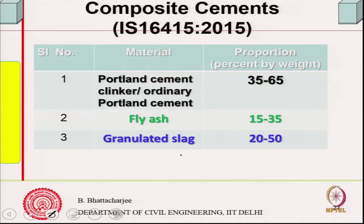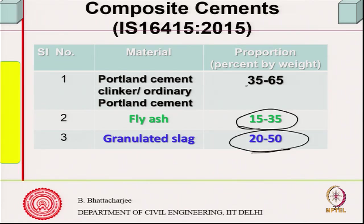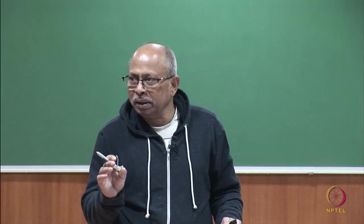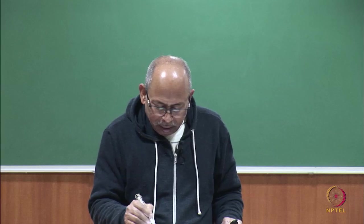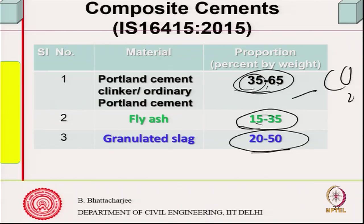The current code gives: fly ash around 15–35%, slag from 20–50%, and Portland cement making up the remainder. You can go up to 35–40% replacement and use this kind of combination. Cement factories producing composite cements are now working with three components in the cement itself, mainly to cut down on the CO₂ issue.